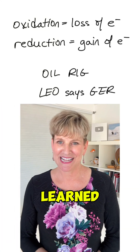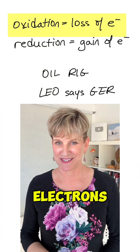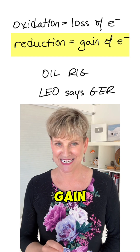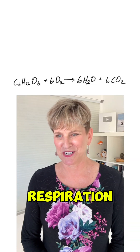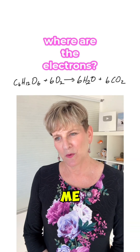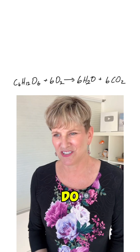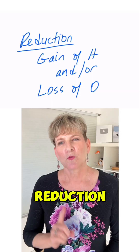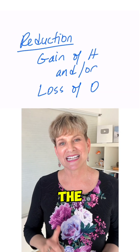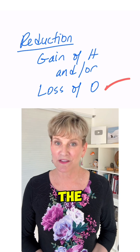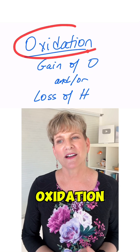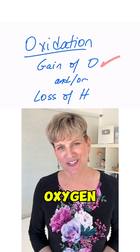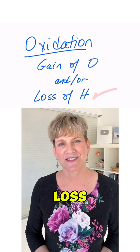You probably learned that oxidation is the loss of electrons and reduction is the gain of electrons, and that's true. But here's the problem, especially for biology students. Look at this equation — the equation for cellular respiration. Where are the electrons moving? Do you see electrons anywhere? So here's a different way to think about it: reduction is going to be the gain of hydrogens and/or the loss of oxygen, and oxidation is going to be the gain of oxygen and/or the loss of hydrogen.